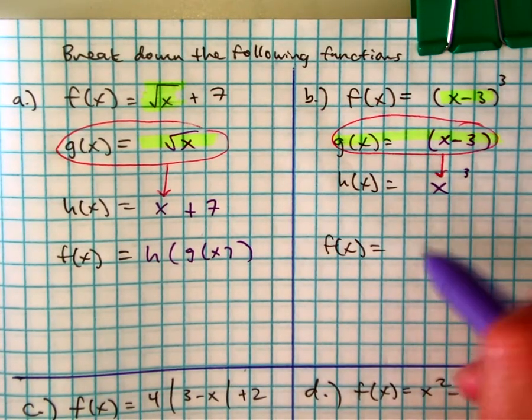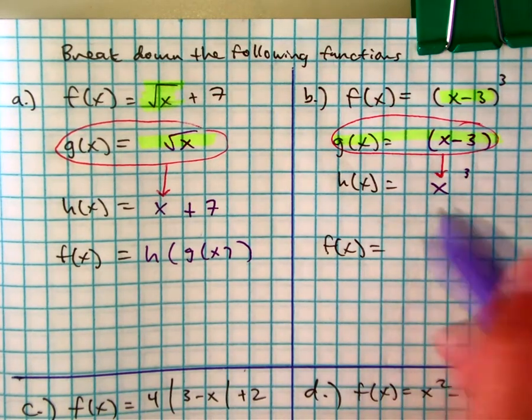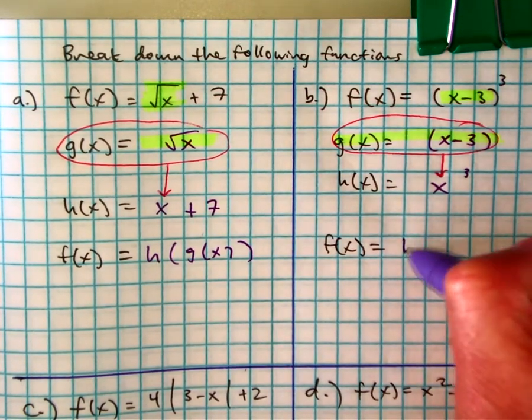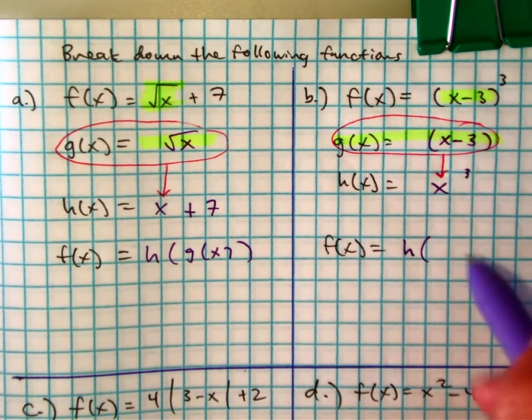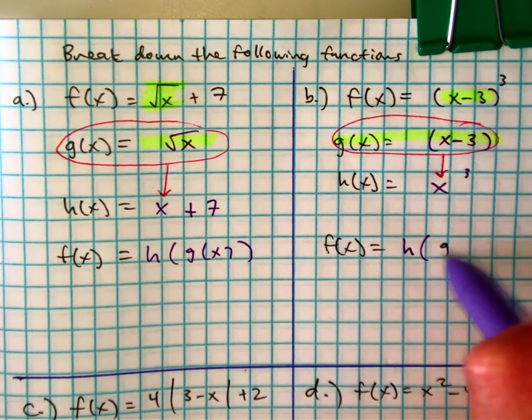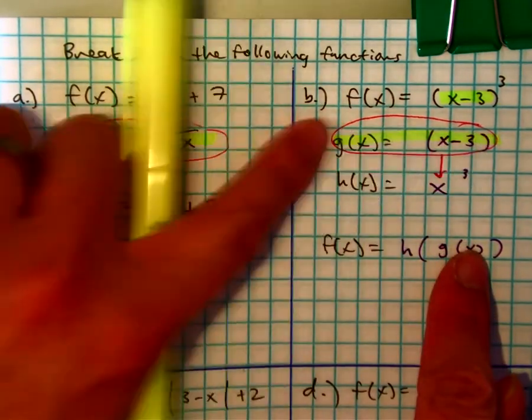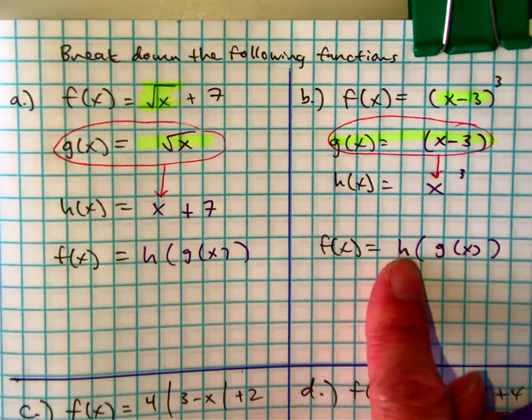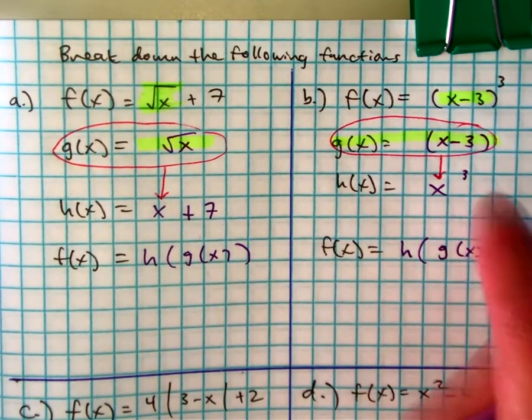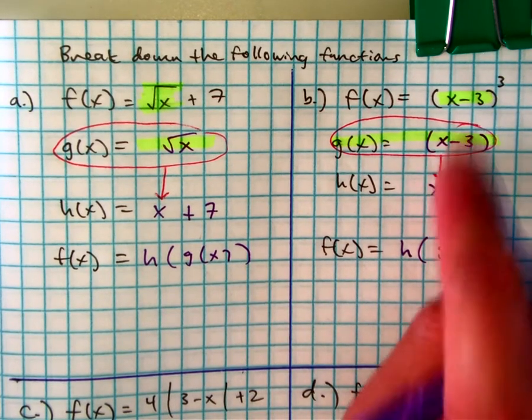So, question. Which function is on the outside? h. And what's on the inside? g. I'm putting the g, function of g, into my function of h. So these are the two simpler functions.